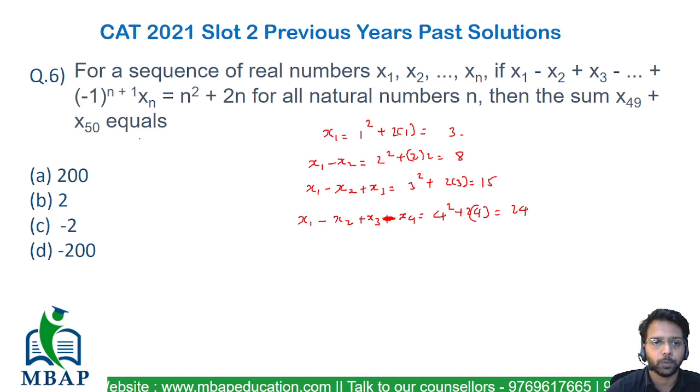Now x1 I already know, the value of x1 is 3 and x1 minus x2 has been given to you as 8. So 3 minus x2 will be equal to 8, so the value of x2 will be equal to minus 5. I repeat, the value of x2 will be equal to minus 5.